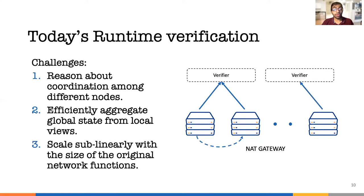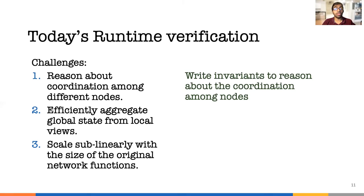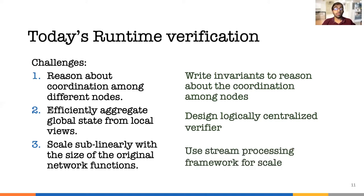Third, the verifier should scale sublinearly with the size of the network functions. There are many NatGateways in Azure, so we need more than a single verifier to verify the system. Verifiers should not do the same amount of work as the network functions, so the required number of verifiers should grow slower than the number of NatGateways. To resolve these challenges, we design our language for writing invariants to explicitly reason about coordination among events, we design a logically centralized verifier to aggregate all global state, and we use a stream processing framework for scaling and fault tolerance.